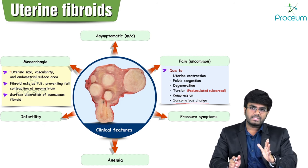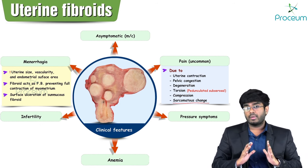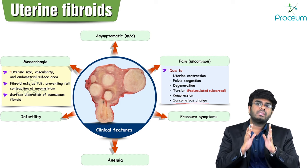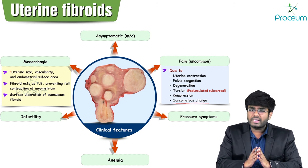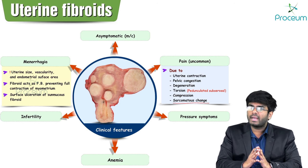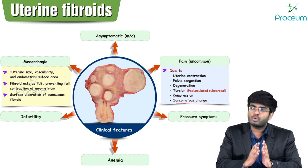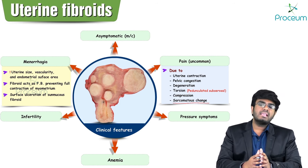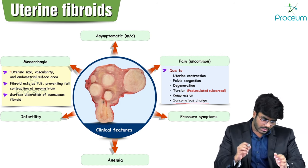To summarize: most of the time fibroids are asymptomatic. If there is a symptom, the most common is menorrhagia. Pain is a less likely symptom.